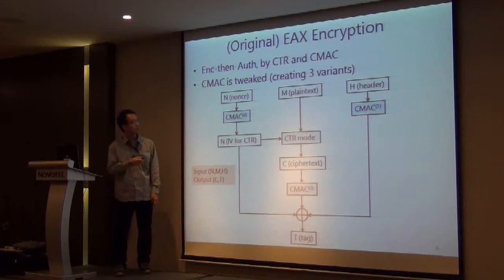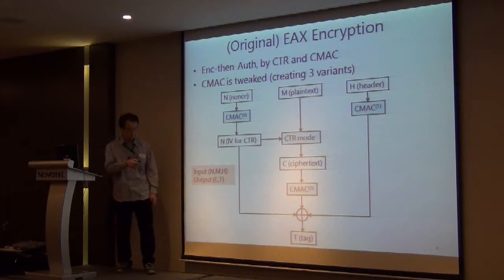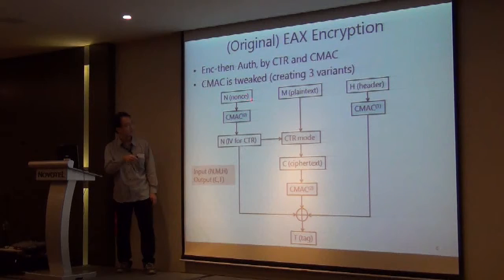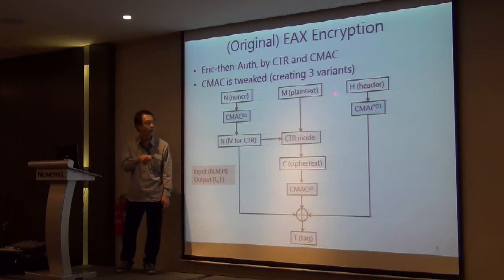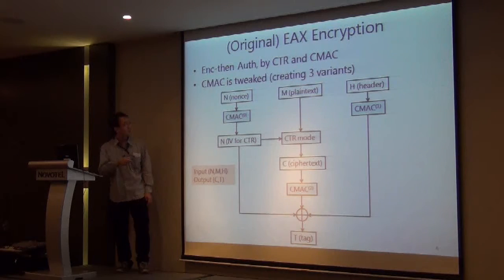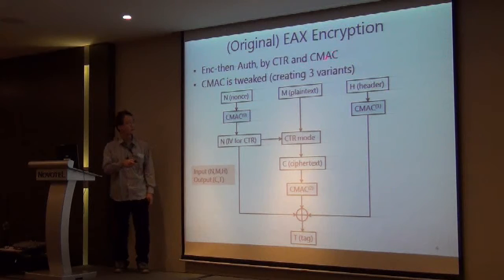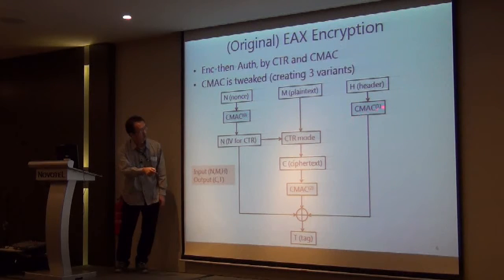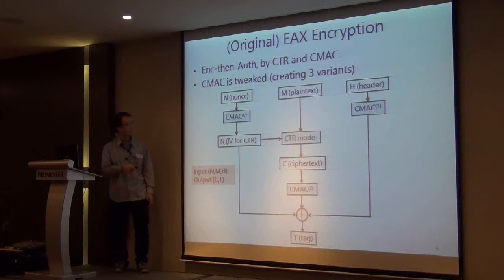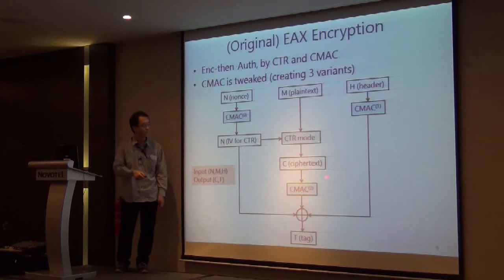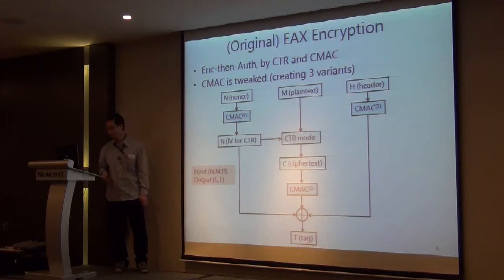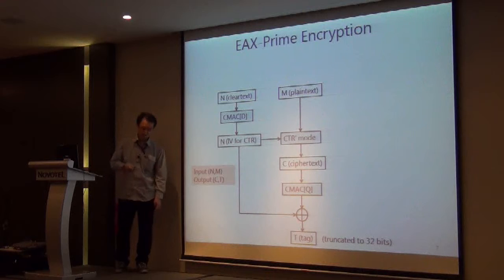The original EAX encryption has three input variables: N means a nonce, M means a plaintext, and H means a header. The global structure is encryption and authentication, where encryption is performed by counter-mode encryption and authentication is done by CMAC. There are three CMAC variants — CMAC0, CMAC1, and CMAC3 — generated by tweaking CMAC.